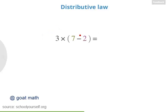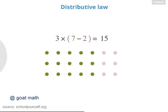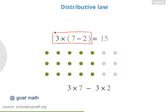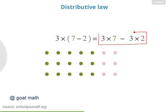Let's look at 3 times (7 minus 2). 7 minus 2 is 5, times 3 is 15, so this expression equals 15. If we evaluate this with dots, we can start with 7 and subtract 2, then have 3 groups of these dots. But you can also think of this as starting with all 3 times 7 dots, and then removing 3 times 2 dots, again leaving 3 times 5 green dots. So 3 times (7 minus 2) equals 3 times 7 minus 3 times 2. Distribution also works with subtraction.